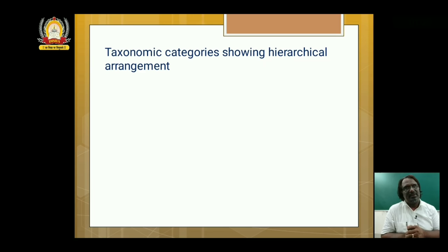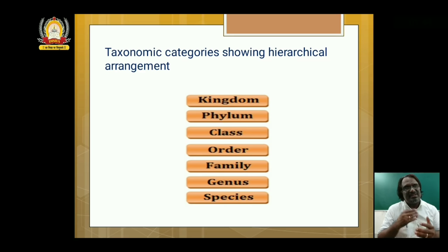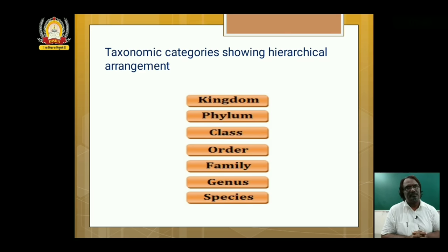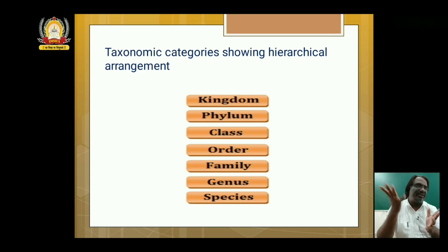Classification is not a single stage process. Classification involves categorization into different hierarchical taxons which are in ascending order: species, genus, family, order, class, phylum or division and kingdom. Species is the basic unit of classification and we go up in ascending order to reach the kingdom. Kingdoms are again classified into five kingdoms which you are familiar with.